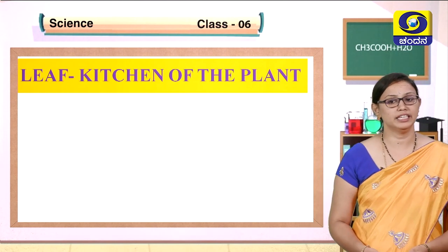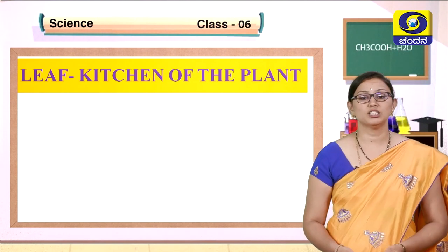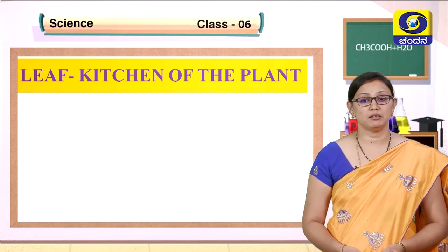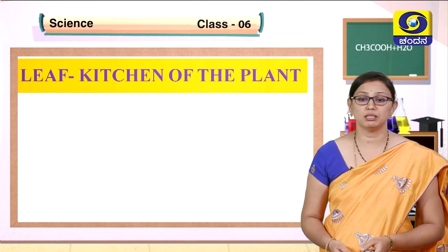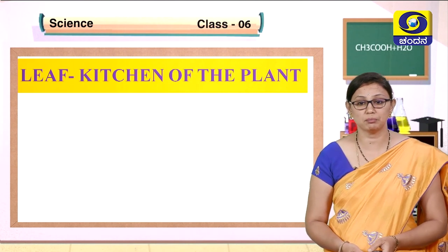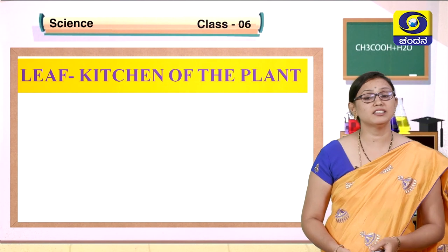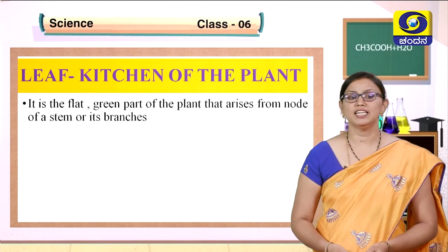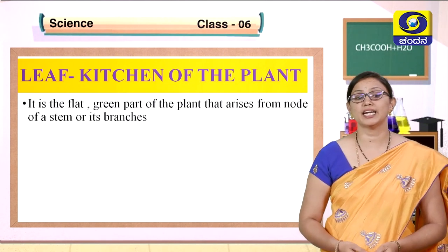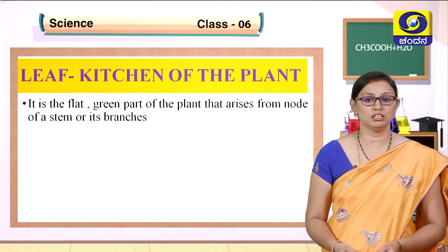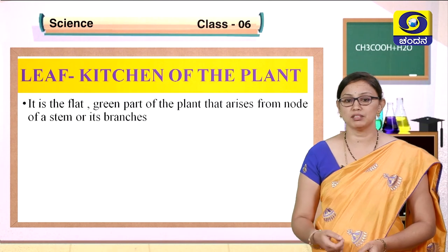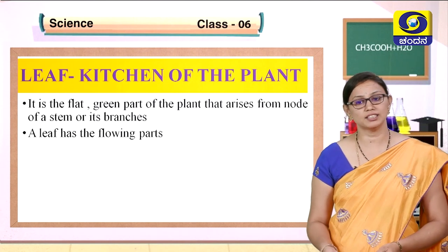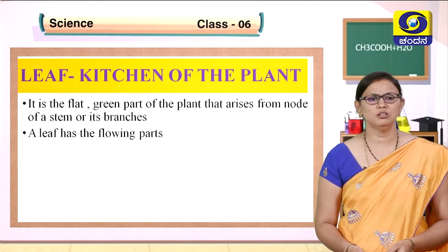Now we will go with the leaf — another part of the plant, also called the kitchen of the plant. Think about why it is called the kitchen: just as food is prepared in your kitchen at home, food is prepared in the leaf. The leaf is a flat green part of the plant that arises from the nodes of the stem.